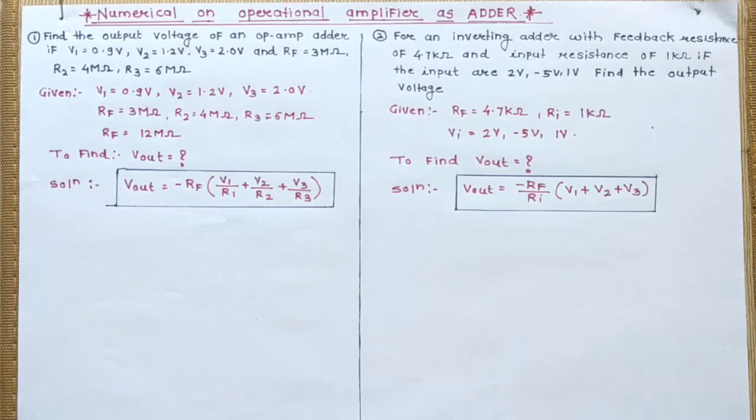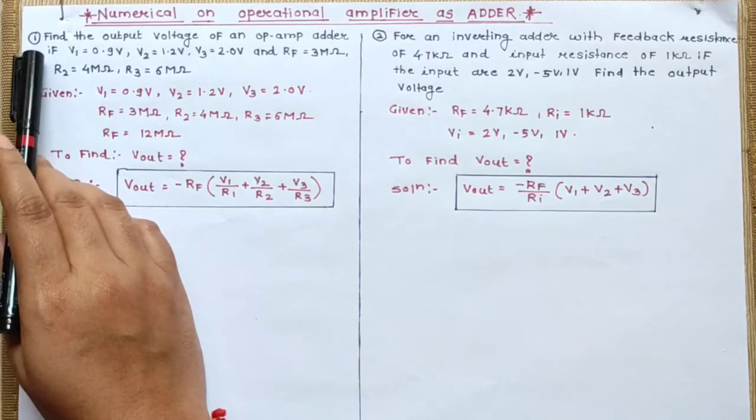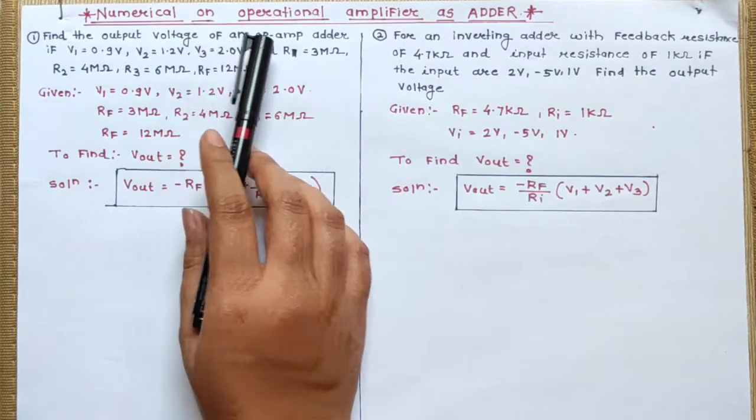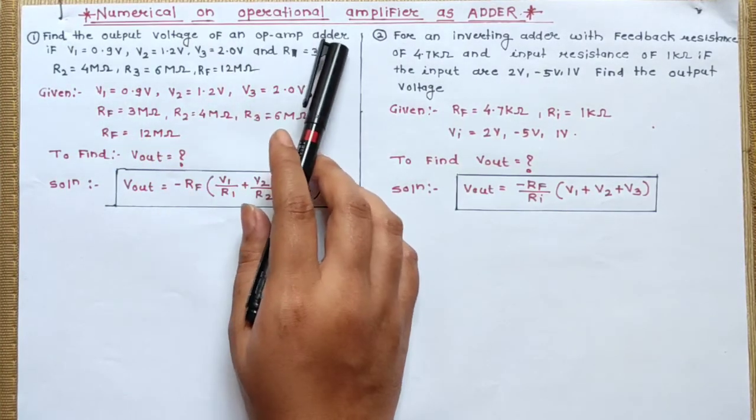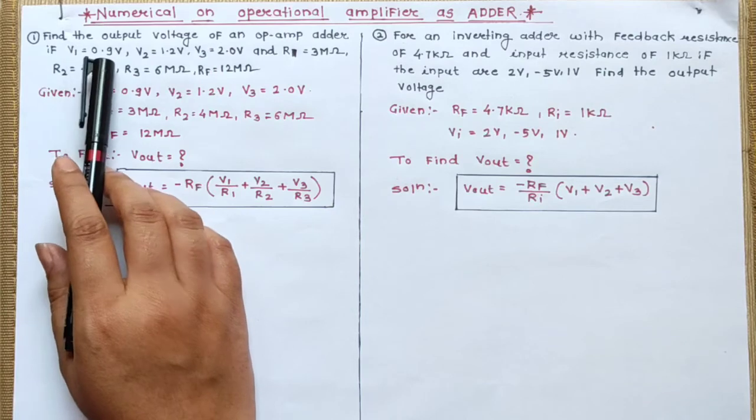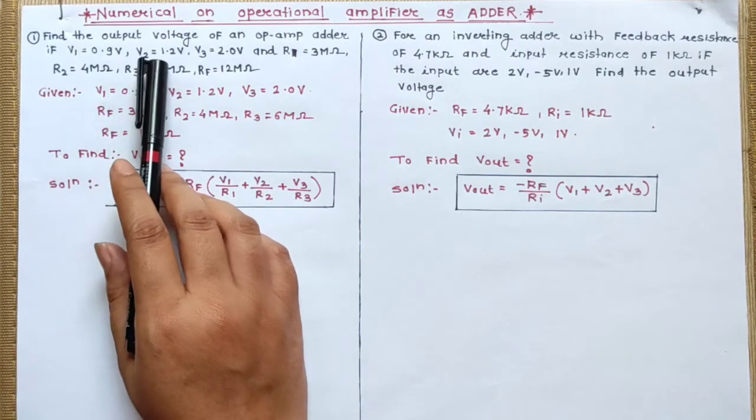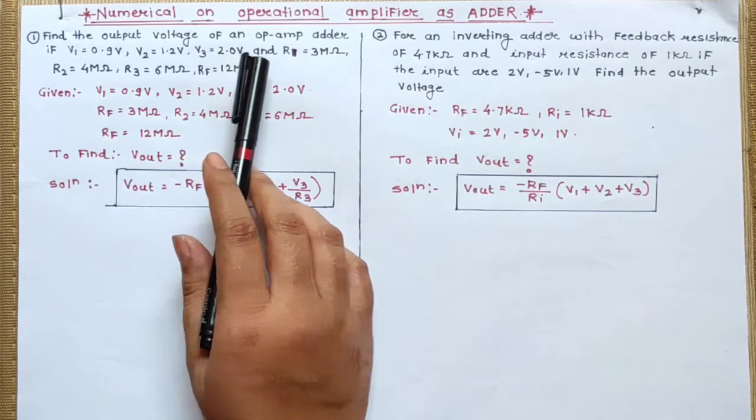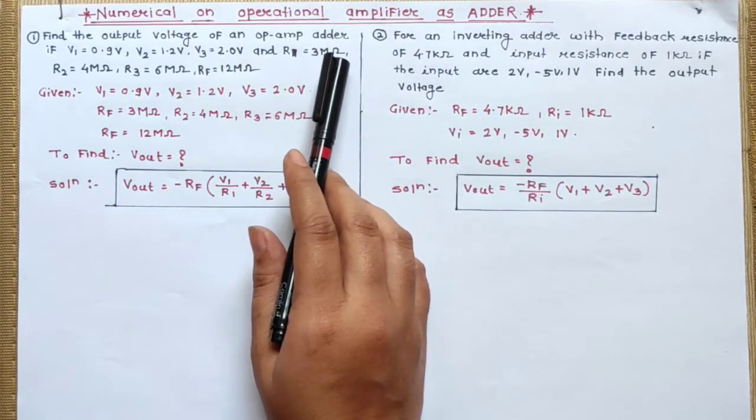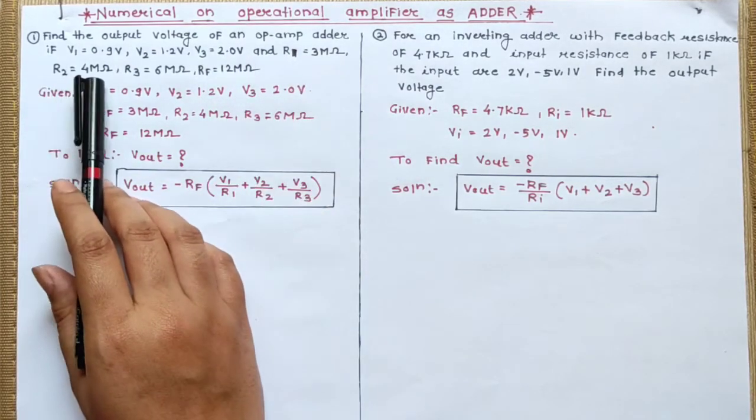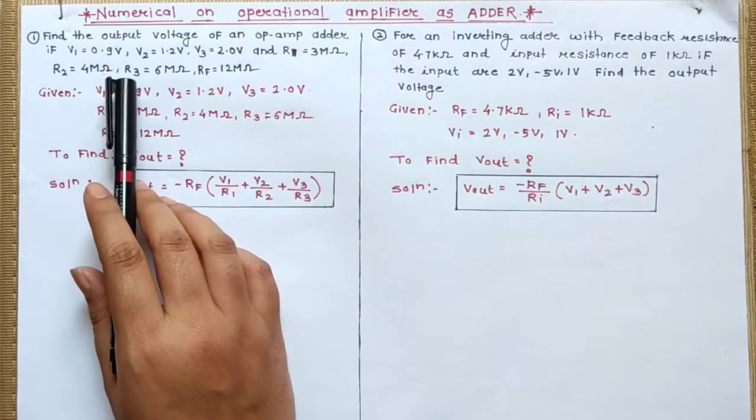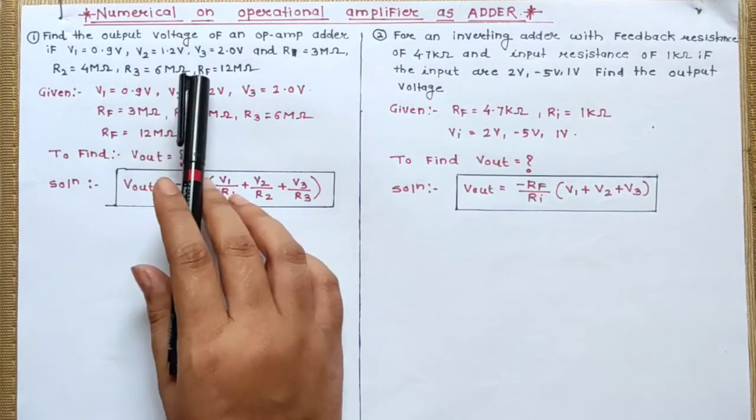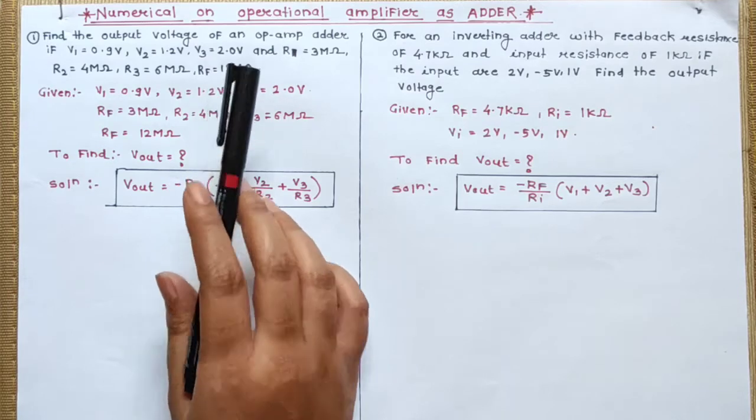So let's come to the first numerical. Numerical number 1: Find the output voltage of an operational amplifier adder if V1 equals 0.9 volt, V2 equals 1.2 volt, V3 equals 2 volt, and R1 equals 3 mega ohms, R2 equals 4 mega ohms, R3 equals 6 mega ohms, and the value of Rf equals 12 mega ohms.